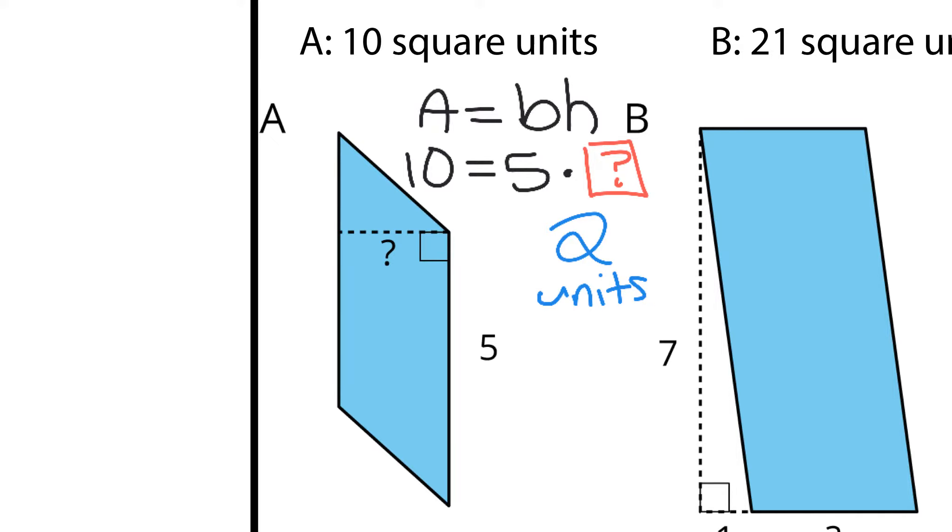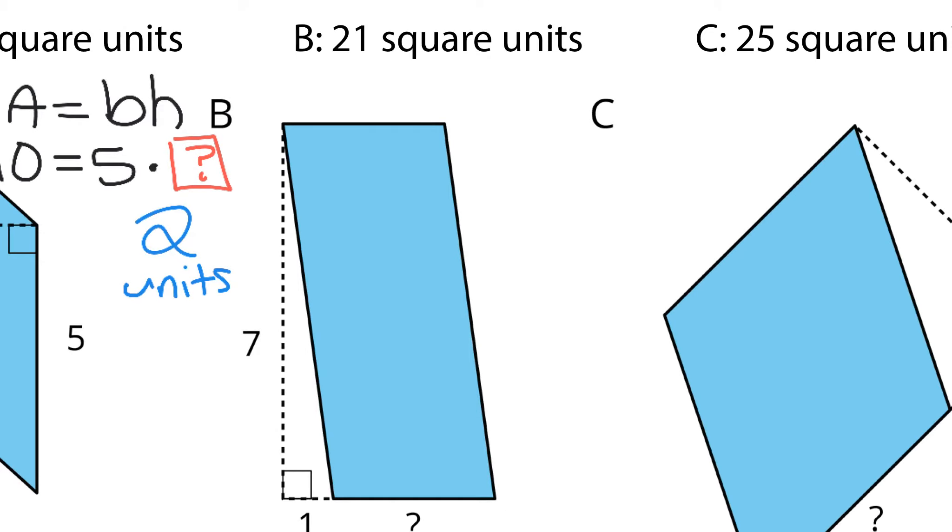Let's move on to B. 21 square units. Well we're told that this distance is 7, and we're looking for that distance. The fact that we have the 1 down there doesn't really affect the question. Area is still going to equal base times height. We're told the area is 21 square units. We could say our base this time is our question mark, and our height is that 7. Well what times 7 is 21? 3 times 7 is 21. So 3 units is my solution.